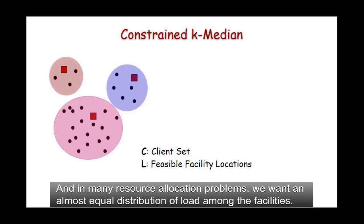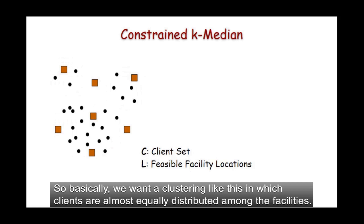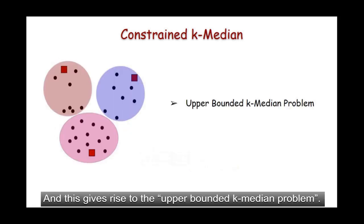And in many resource allocation problems, we want an almost equal distribution of load among the facilities. So basically, we want a clustering like this, in which clients are almost equally distributed among the facilities. And this gives rise to the upper bounded k-median problem.